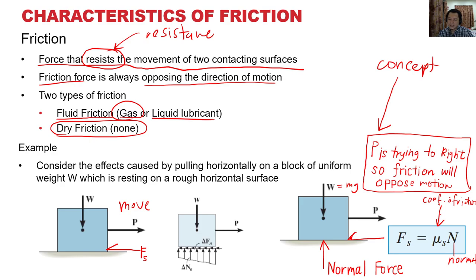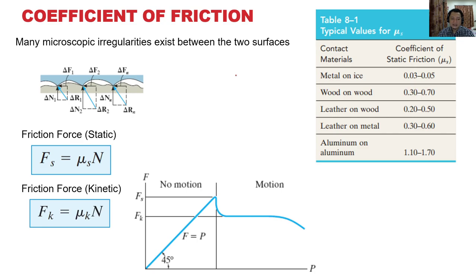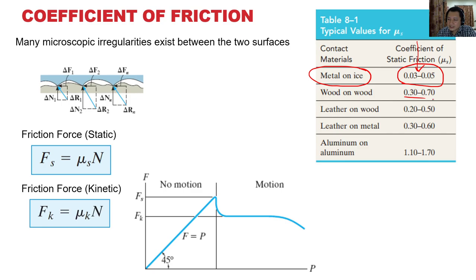The coefficient of friction depends on the materials in contact. For metal on ice, the value is very low — around 0.03 to 0.05. For wood on wood, it's 0.3 to 0.7. Leather on wood is also in a moderate range. Aluminum on aluminum is very high — 1.1 to 1.7. Depending on your case, you can take an average to decide the friction value.